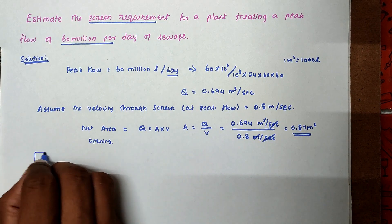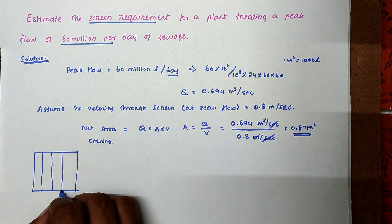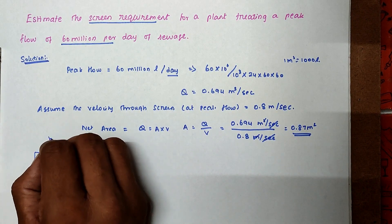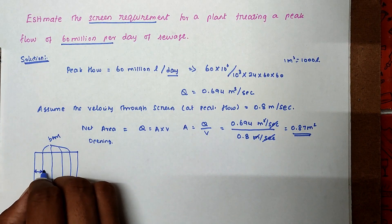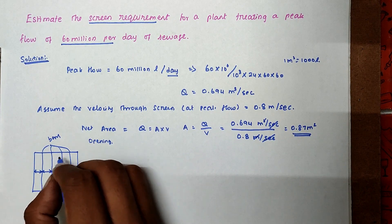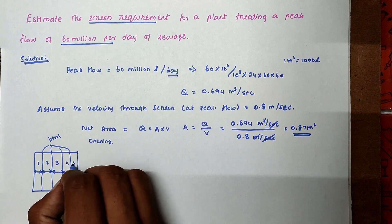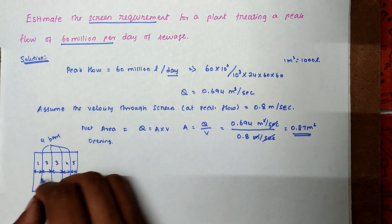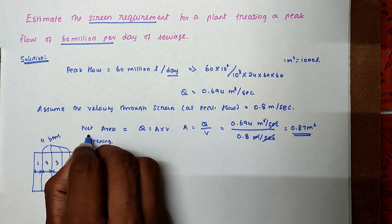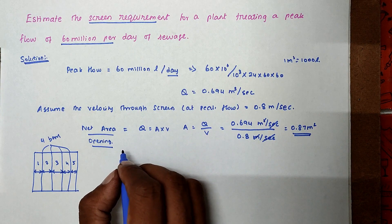For example, take this bar screen — there are 4 bars and 5 openings. The 0.87 m² is only the area of the openings, not the total area of the screen.